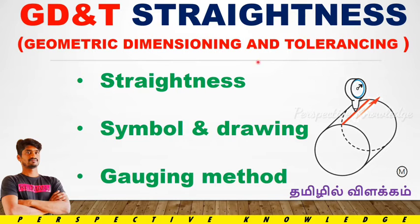The first feature in GD&T is Straightness. What is straightness? How is it identified? How is it measured? We will talk about the gauging method in this video and go through all the details.